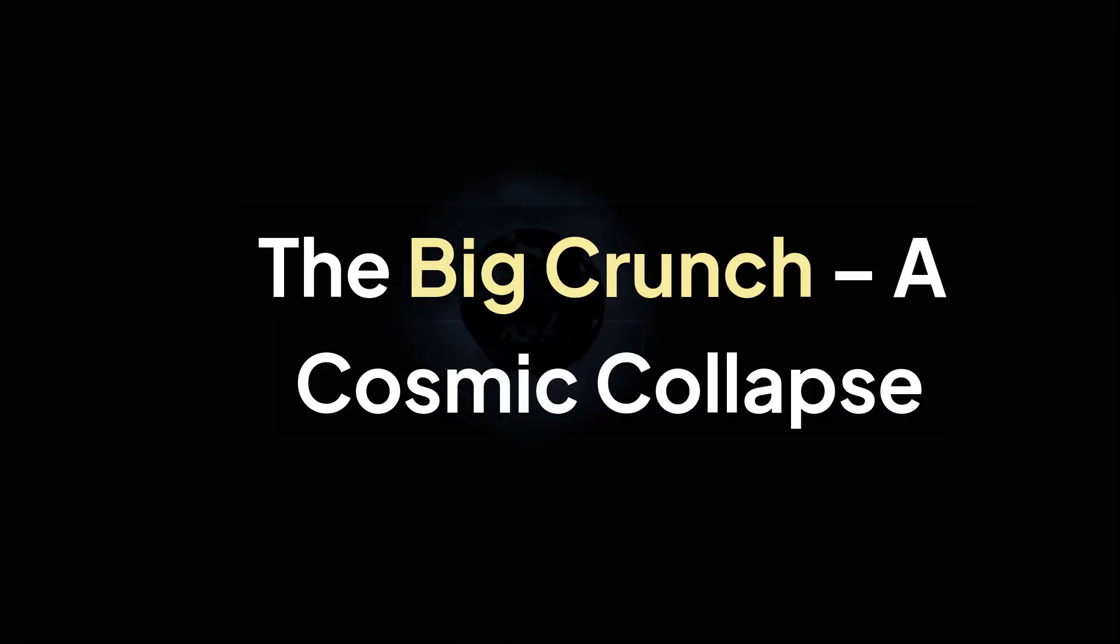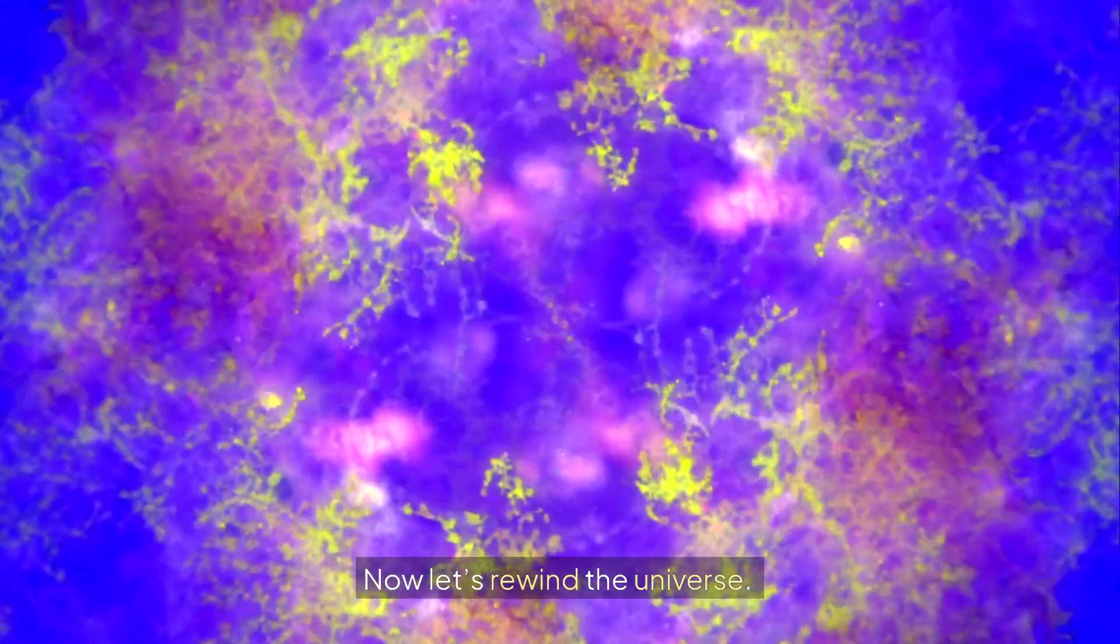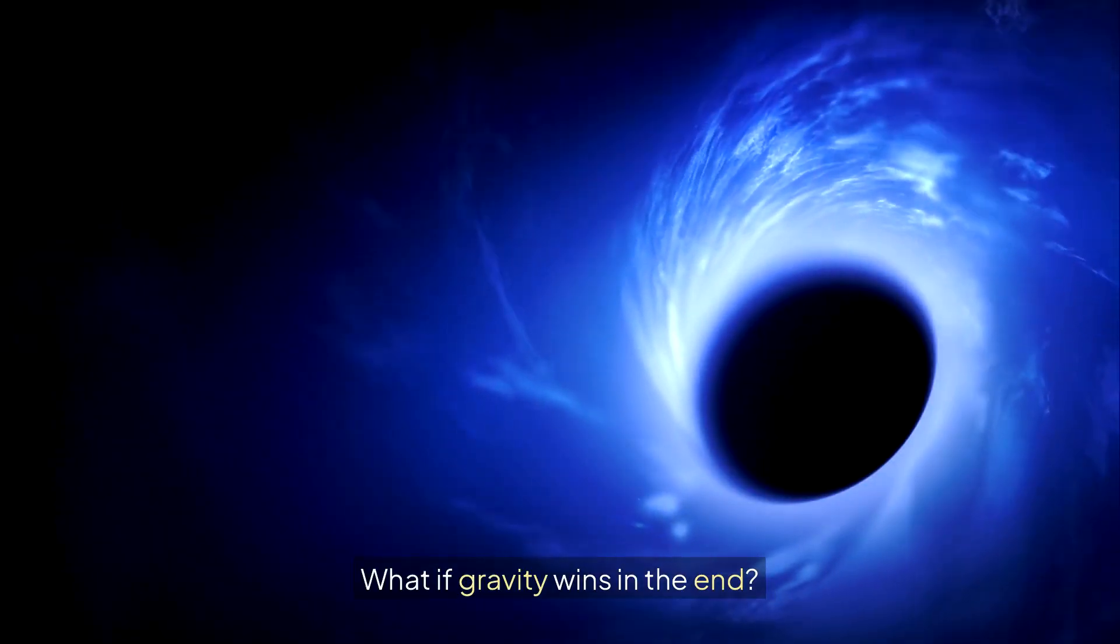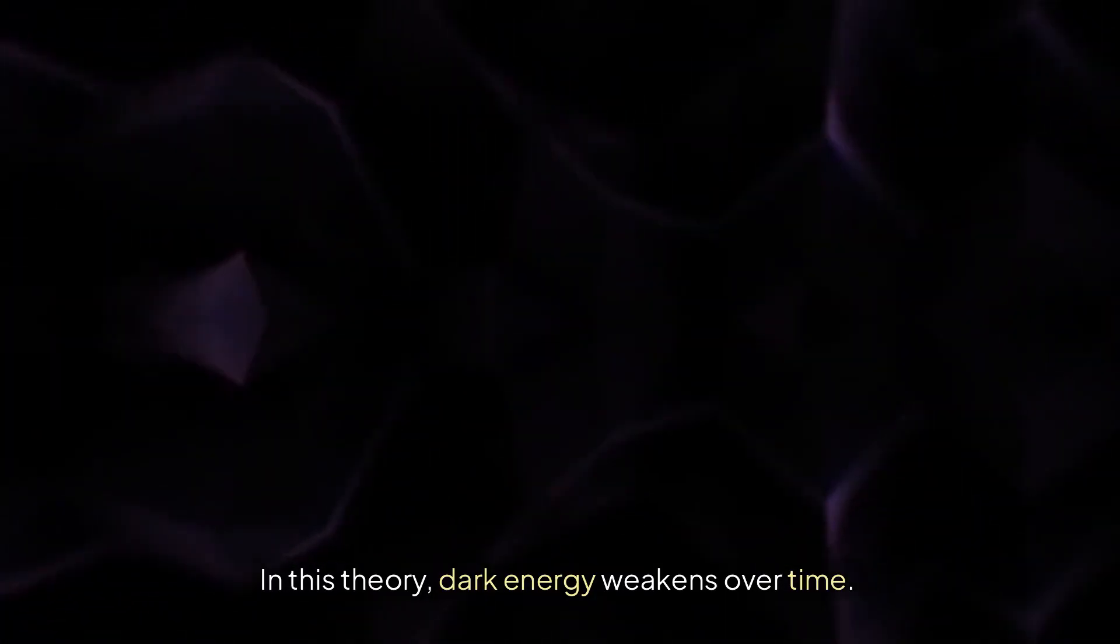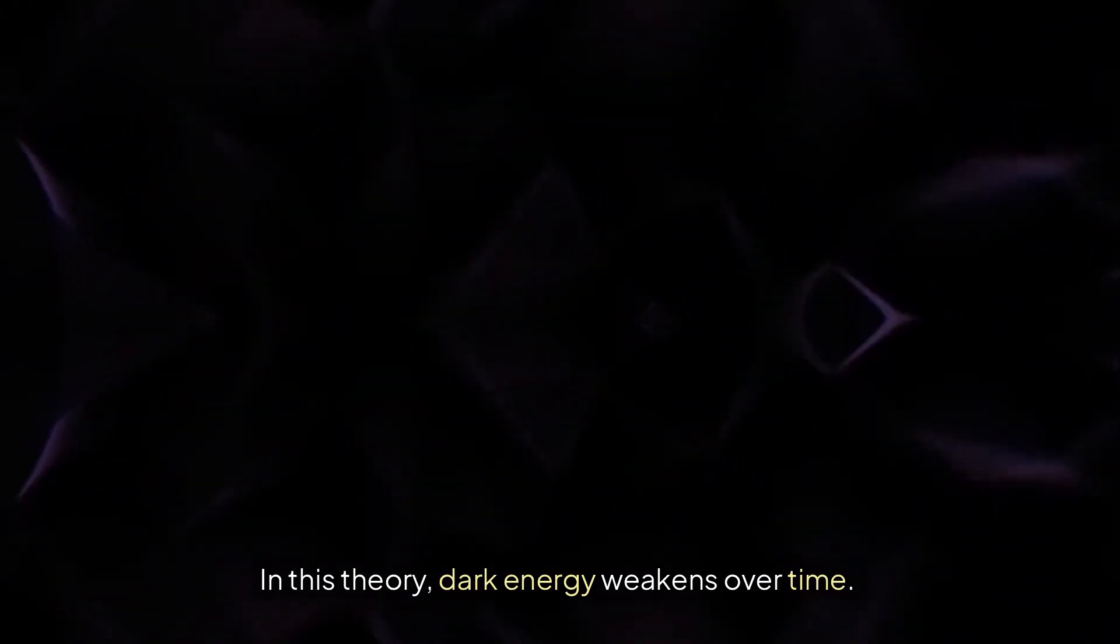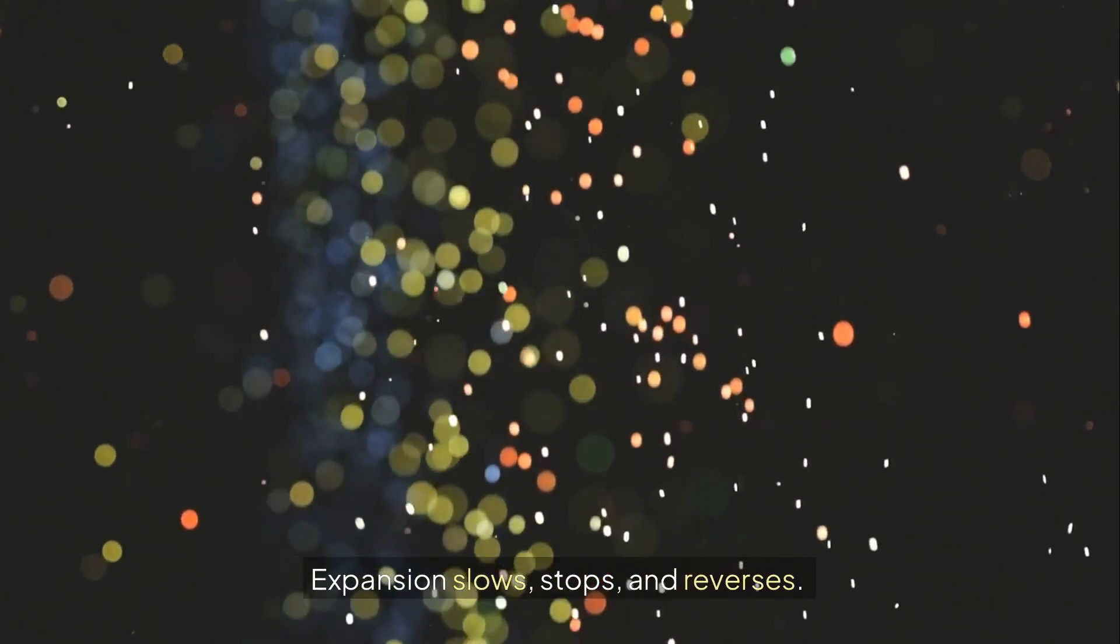The Big Crunch: A Cosmic Collapse. Now, let's rewind the universe. What if gravity wins in the end? This is the Big Crunch. In this theory, dark energy weakens over time. Gravity takes over. Expansion slows, stops, and reverses.